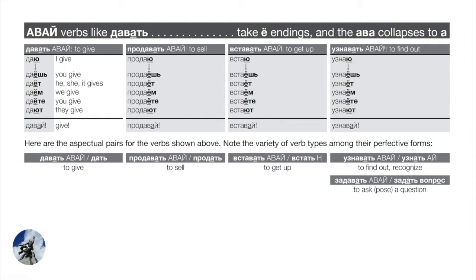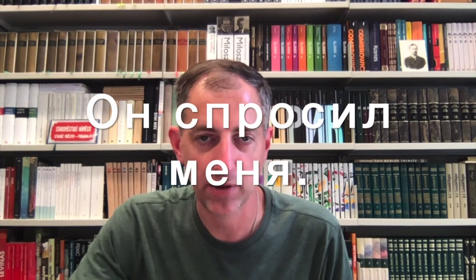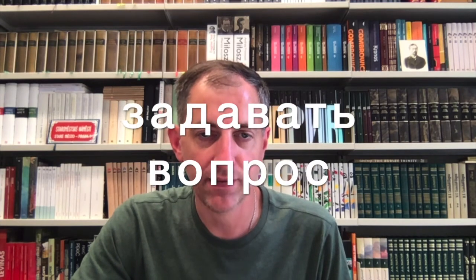One final verb: a prefixed form of давать is задавать/задать — that's the verb we use to ask a question, or 'pose a question' in Russian. This is extremely important because it's a very common mistake to say спрашивать вопрос. A student will want to say 'he asked me a question' and say он спросил меня вопрос — but you can never say that in Russian. Спросить can't take 'question' as a direct object. The Russian idiom is задавать вопрос — the idea of posing or serving up a question.